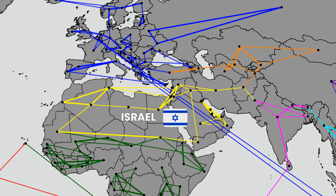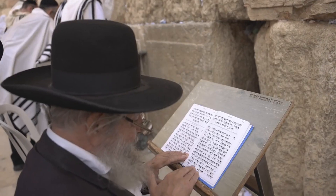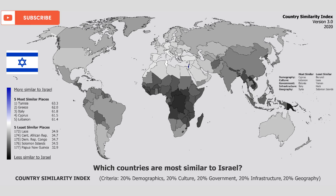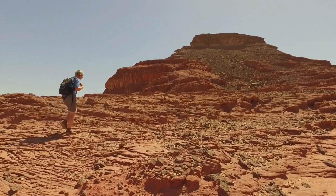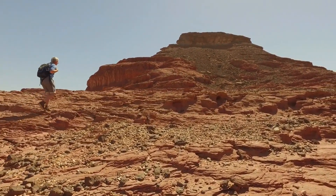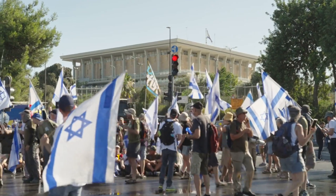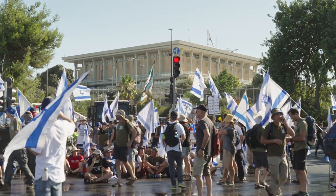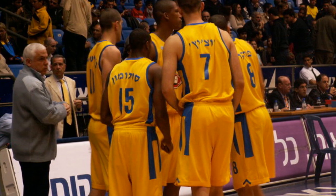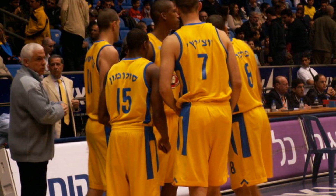Israel, another Mediterranean country, also has connections with two different regions, and it is without a doubt one of the most unique countries in the world. As a result, it does not fit in well with either European countries or Middle Eastern countries. Although it is geographically within the Middle East, many of its people are immigrants from Europe. It is also more democratic than most Middle Eastern countries and has less conservative laws. Despite being in Asia, its sports teams often compete in European competitions.